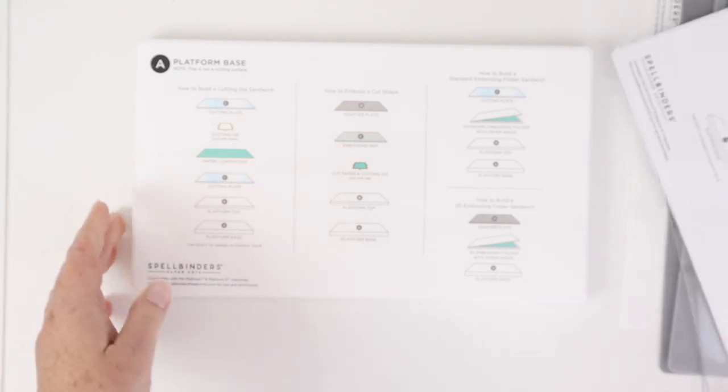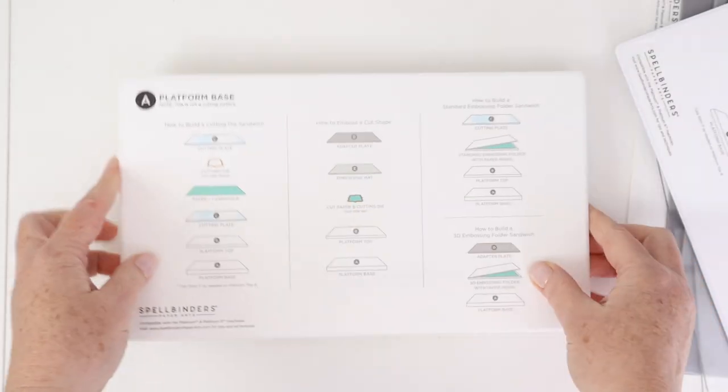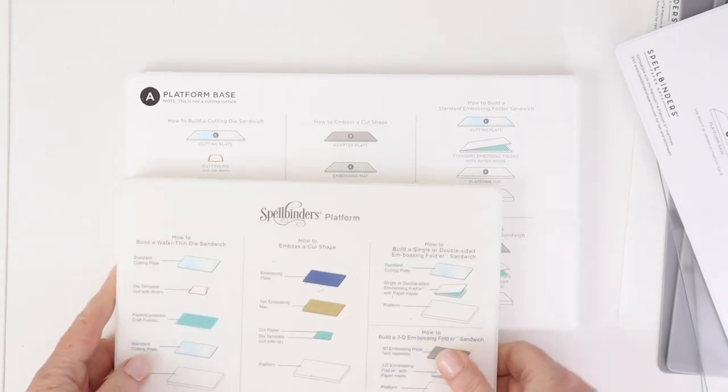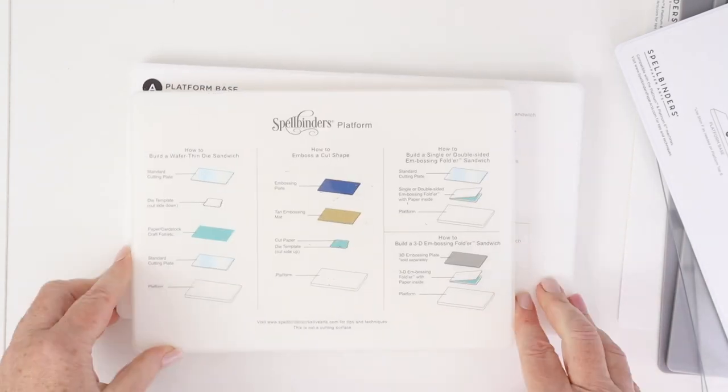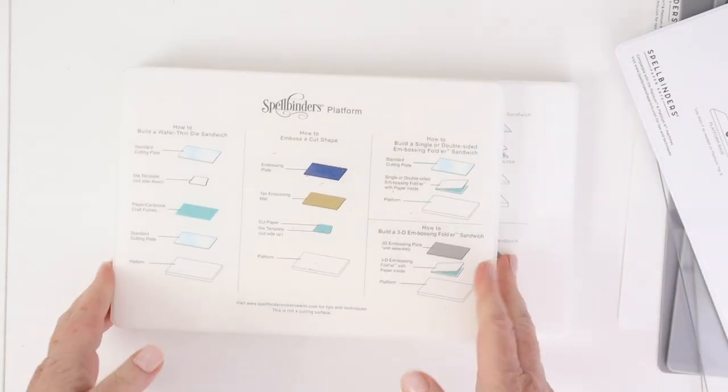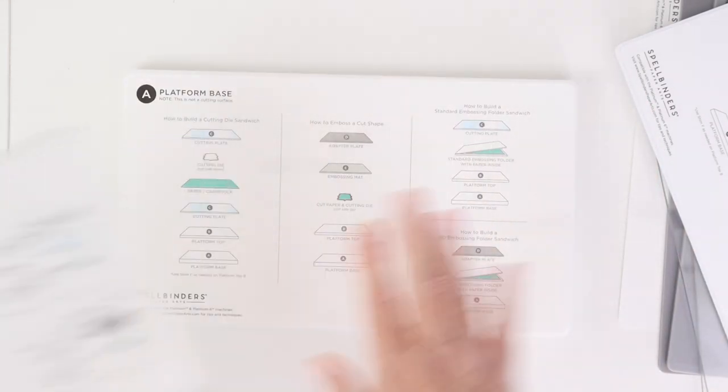There is the platform top and the platform base. And as I mentioned before, this is an extended length compared to your normal Platinum 6 length. What you see on top is the normal Platinum 6 platform that comes with the die cut machine. This length is definitely extended.